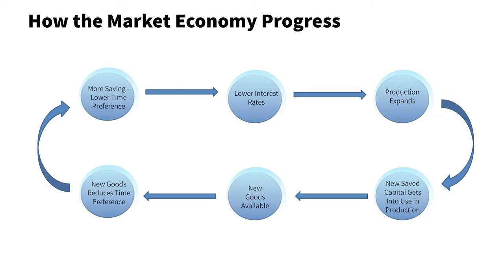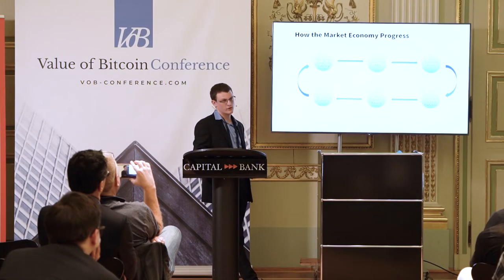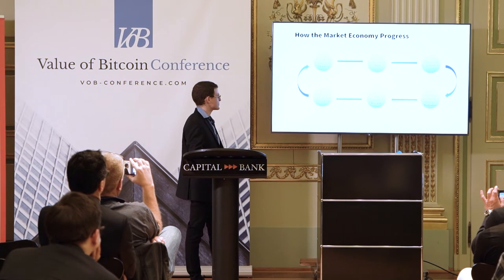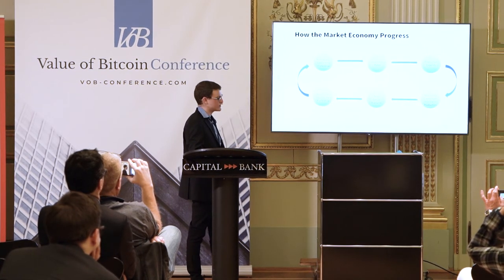As production expands, entrepreneurs start taking more loans and use them to buy the goods that were saved in the first step when people started increasing their savings. They will integrate the new saved capital into their production structure and use it to enhance production. This is how the division of labor works in the market. As they start producing more, eventually there will be new goods available and a greater supply of goods, which creates a positive feedback loop — people being able to produce and save even more capital without diminishing their consumption, and use this extra capital to produce even more, lowering their time preference even further.